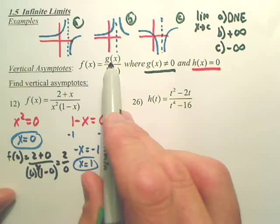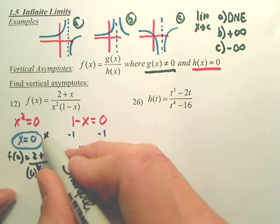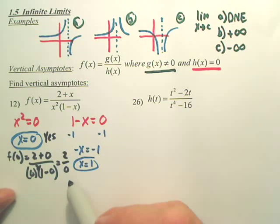When I plug in zero, I get two over zero. Is g of x not equal to zero? Is the top a constant, the bottom zero? So, is it a vertical asymptote? Yes, because there's a constant over a zero.